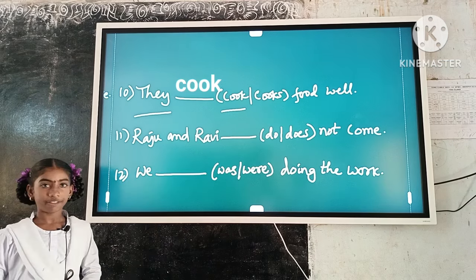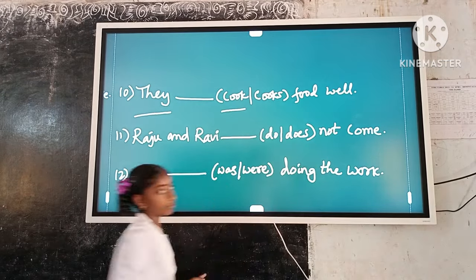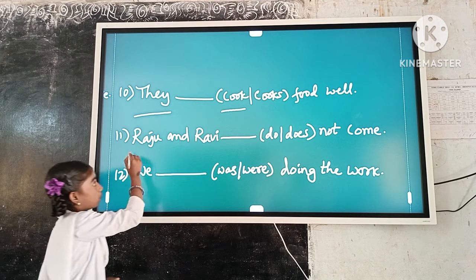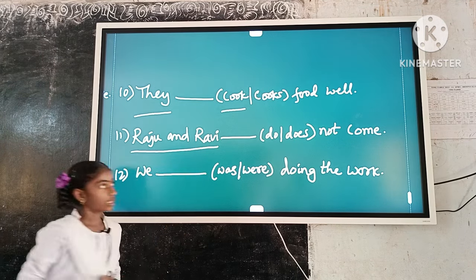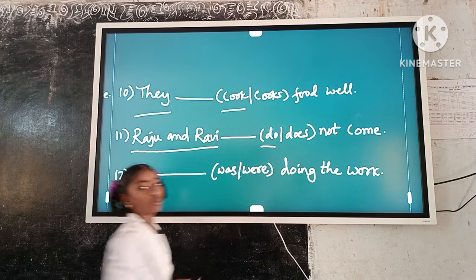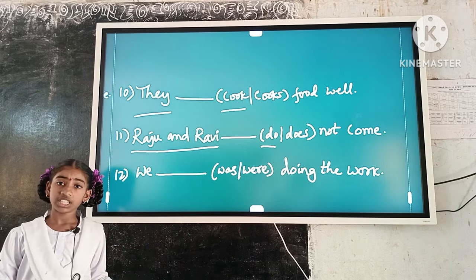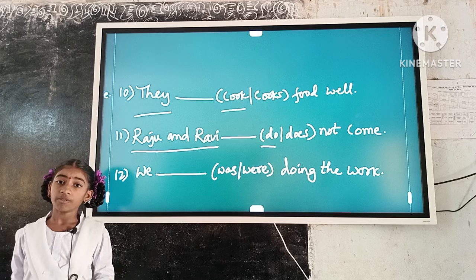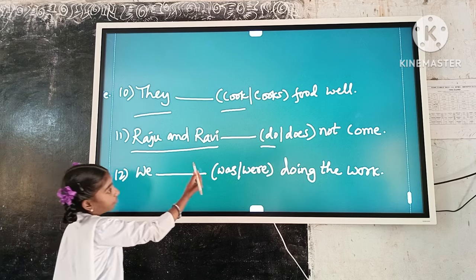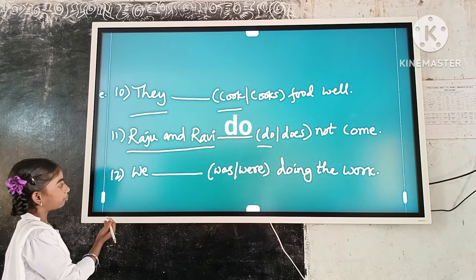Example number 11: Raju and Ravi dash not come. Here, the subject is plural. 'Do' is a plural verb form. So, plural subject and plural verb form agree. The answer is: Raju and Ravi do not come.